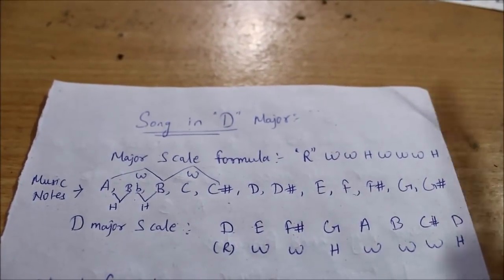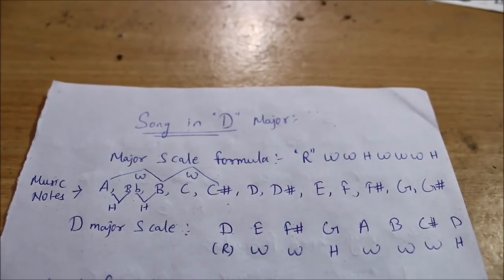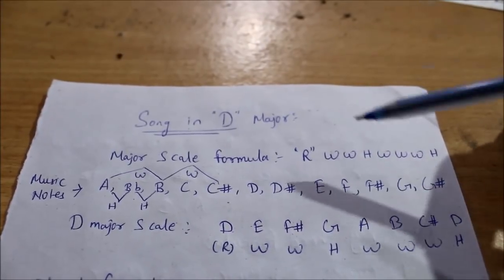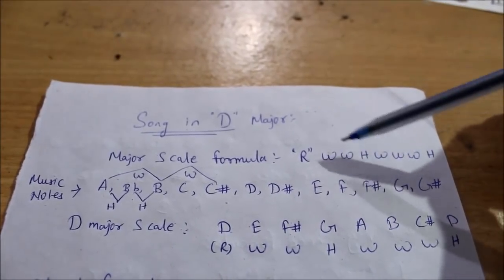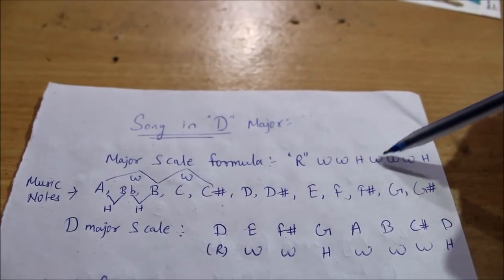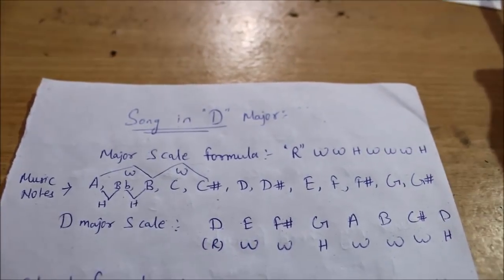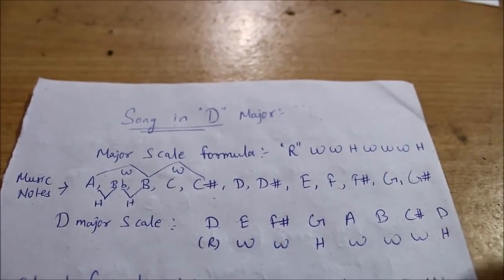First, you have to derive the scale using the formula: Root, Whole, Whole, Half, Whole, Whole, Whole, Half. Don't be confused, I will explain it briefly.